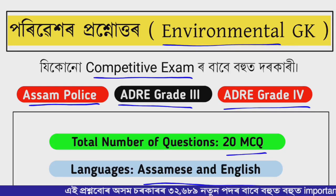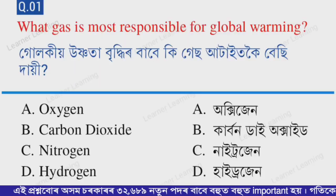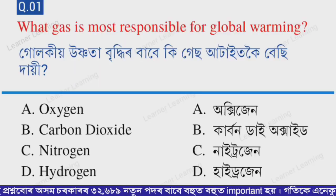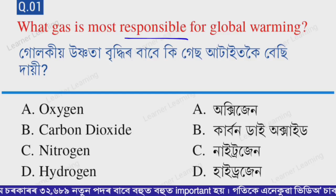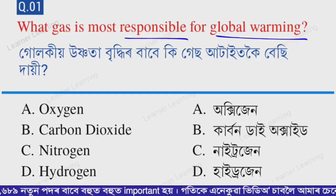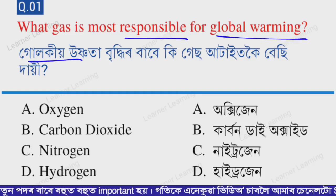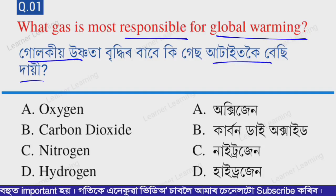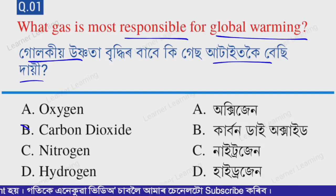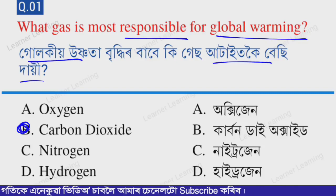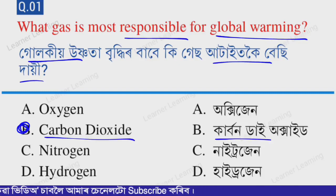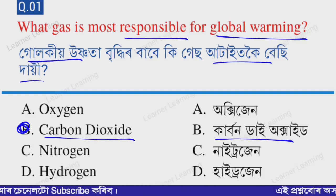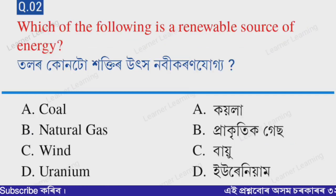The first question: What gas is most responsible for global warming? The correct option is option B — carbon dioxide. Carbon dioxide is responsible for global warming.